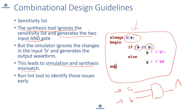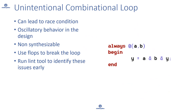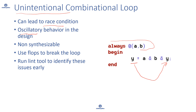Let's look at another example — a combinational loop in the design. In an always block, Y is a function of Y itself, creating an unintentional combinational loop. This can lead to a race condition or oscillatory behavior in the design. Of course, this is non-synthesizable, and the guideline is to use flops to break the loop. This issue can be missed by functional verification or may only be caught during synthesis.